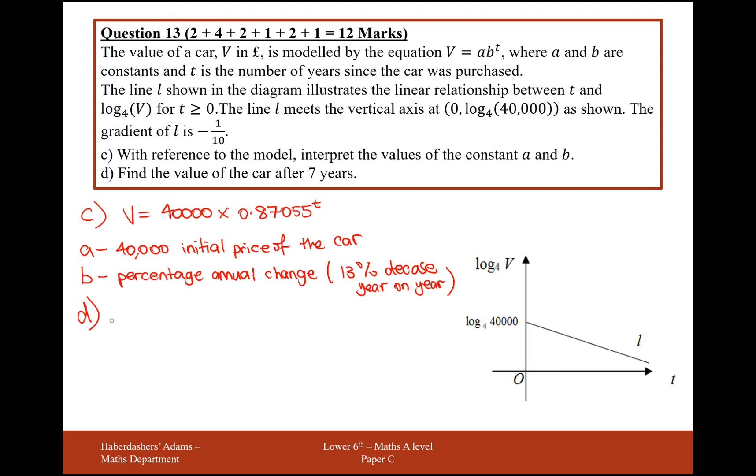Find the value of the car after seven years. So all we need to do there is just plug in t equals 7. So 40,000 times 0.87055 to the power of 7, and get your calculator out and that would do the work for you. And we get there 15,157 pounds.